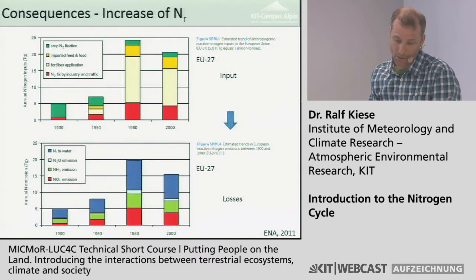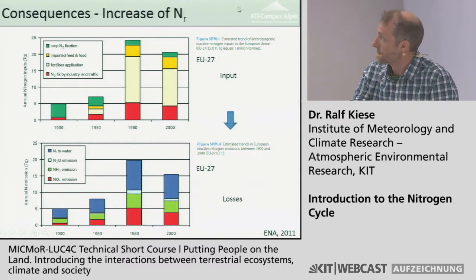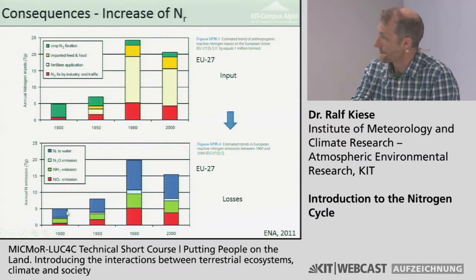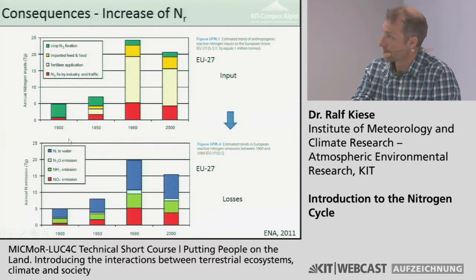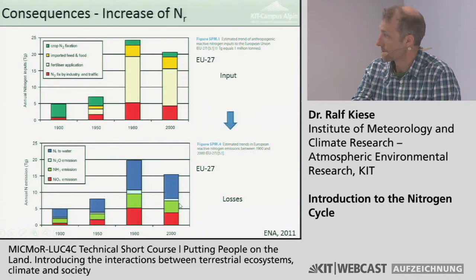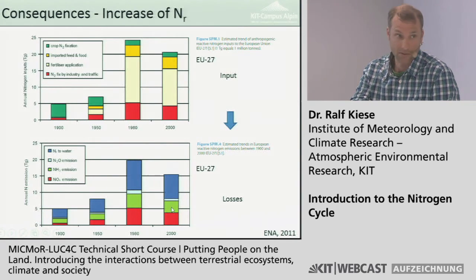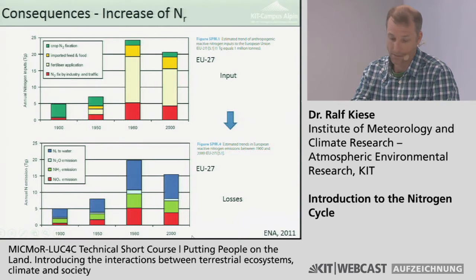Looking at losses in the EU: losses have increased from 1900 to 2000. About half goes as nitrate transported into water bodies. Then we have N2O emissions which are rather small, compared to ammonia volatilization which drives redeposition mostly, and combustion processes also involved in redeposition.